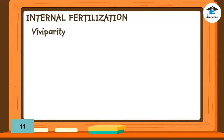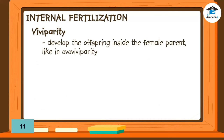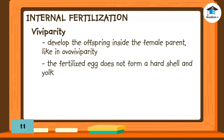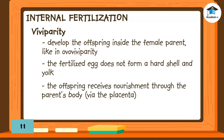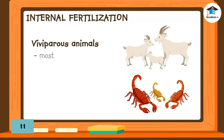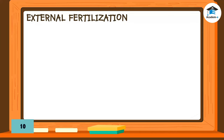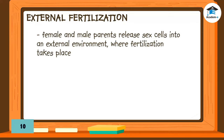Similar to ovoviviparity, animals that undergo viviparity develop offspring inside the female parent. But unlike in ovoviviparous animals, the fertilized egg does not form a hard shell and yolk. The offspring receives nourishment through the parent's body via the placenta. Viviparous animals include most mammals and scorpions.